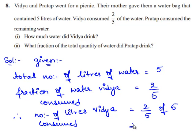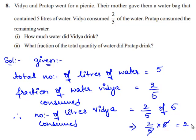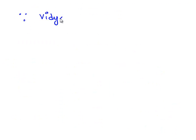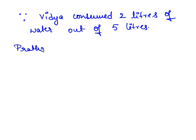As we know, 2 by 5 of 5 is nothing but 2 by 5 multiplied by 5. Since 5 is a common factor in both the numerator and denominator, 5 gets cancelled and we are remained with 2. Therefore, number of litres Vidya consumed is equal to 2.